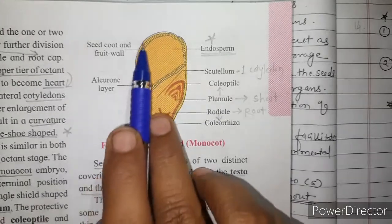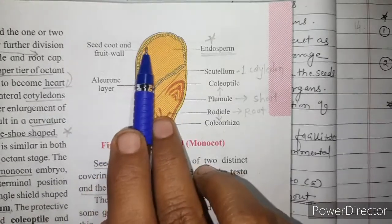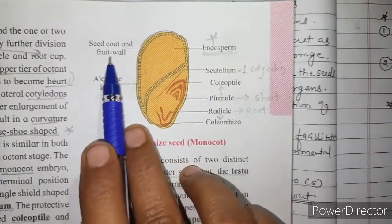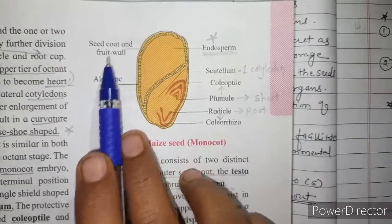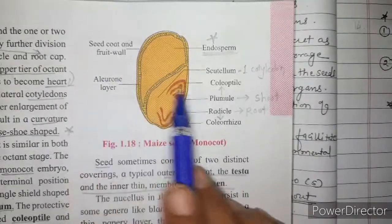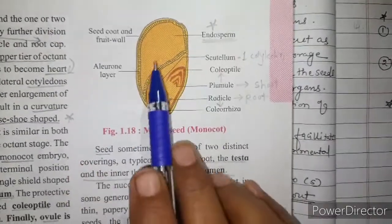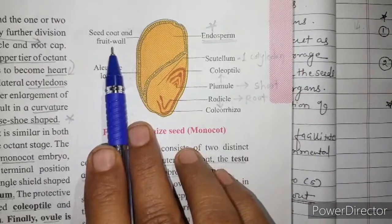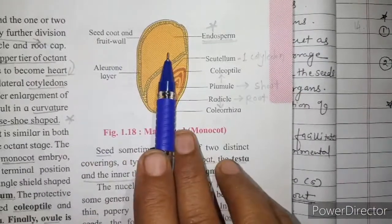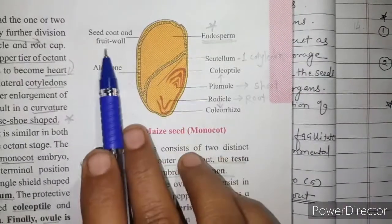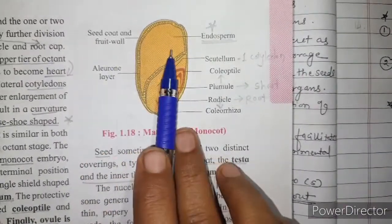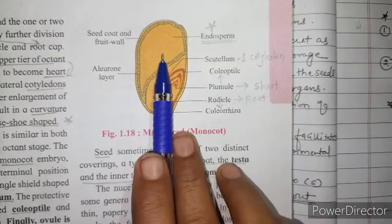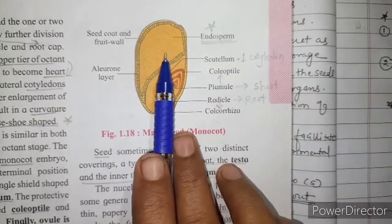In monocot seeds, the seed coat and fruit wall are fused together, so the fruit and seed are one and the same. These seeds are called grains.